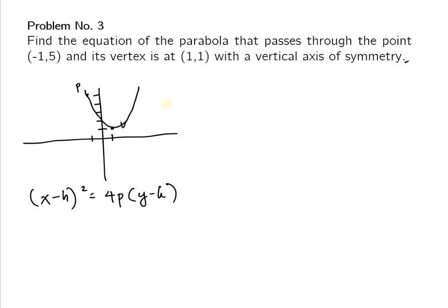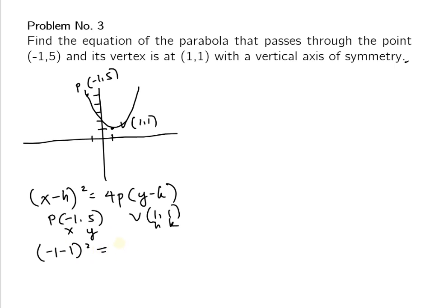We do not have the value of p, so we solve for it using the known values. From the point (-1, 5) and vertex (1, 1): h = 1, k = 1, x = -1, y = 5. Substituting: (-1 - 1)² = 4p(5 - 1), so (-2)² = 4p(4), giving 4 = 16p. Dividing both sides by 16, p = 4/16 = 1/4.